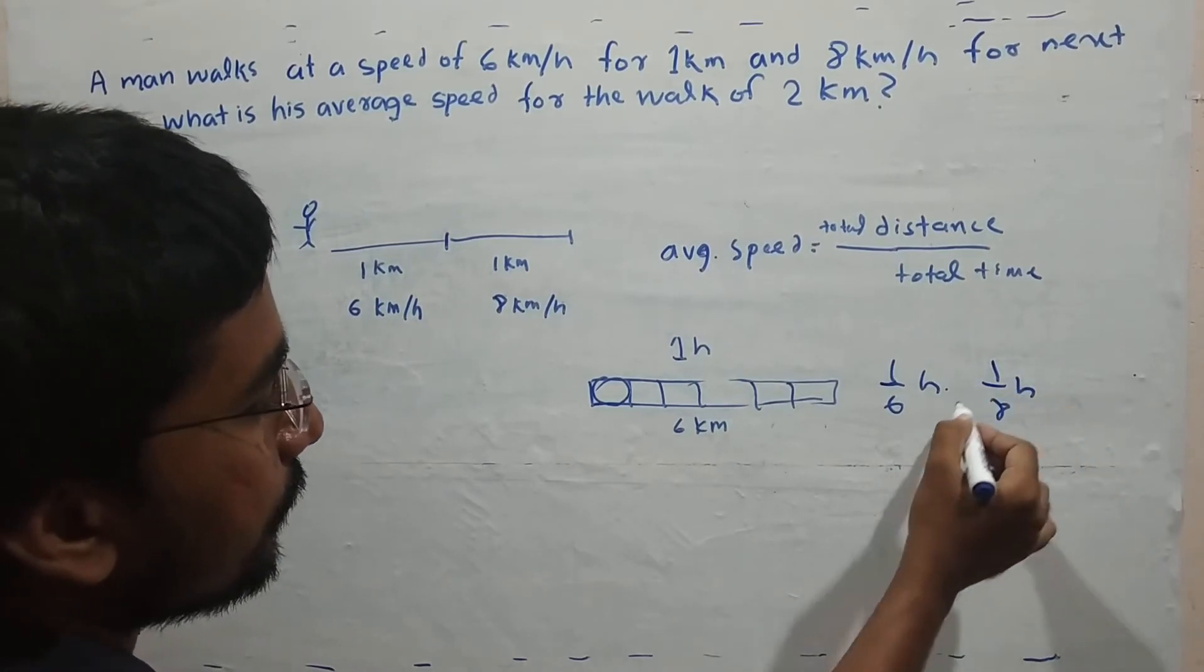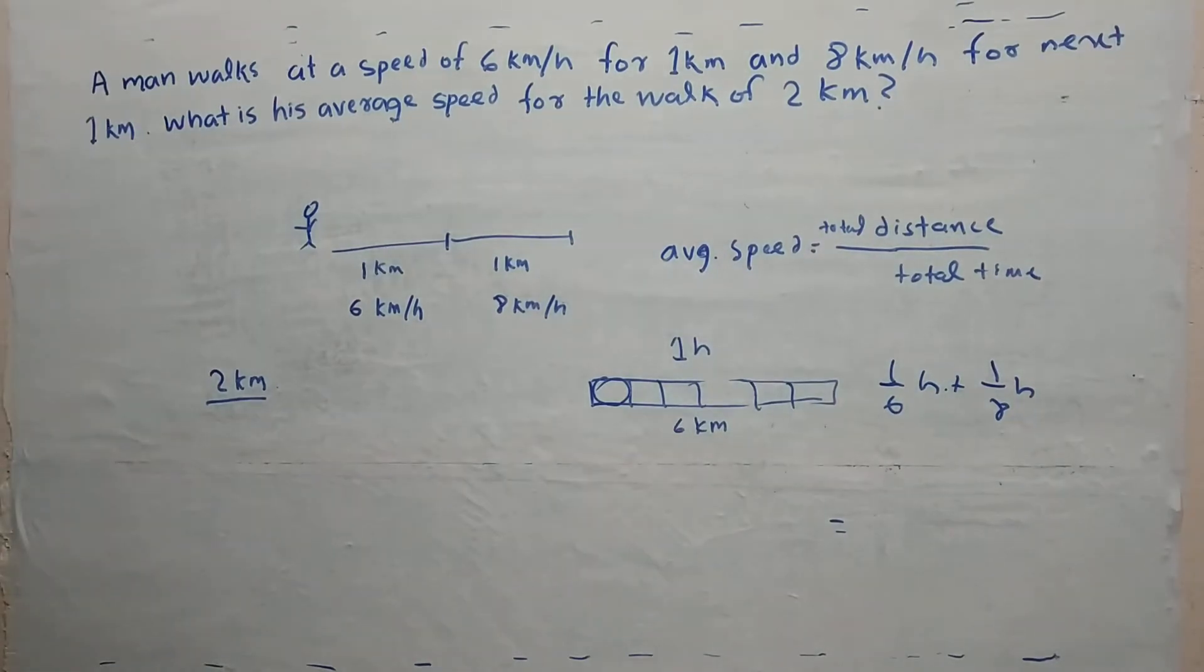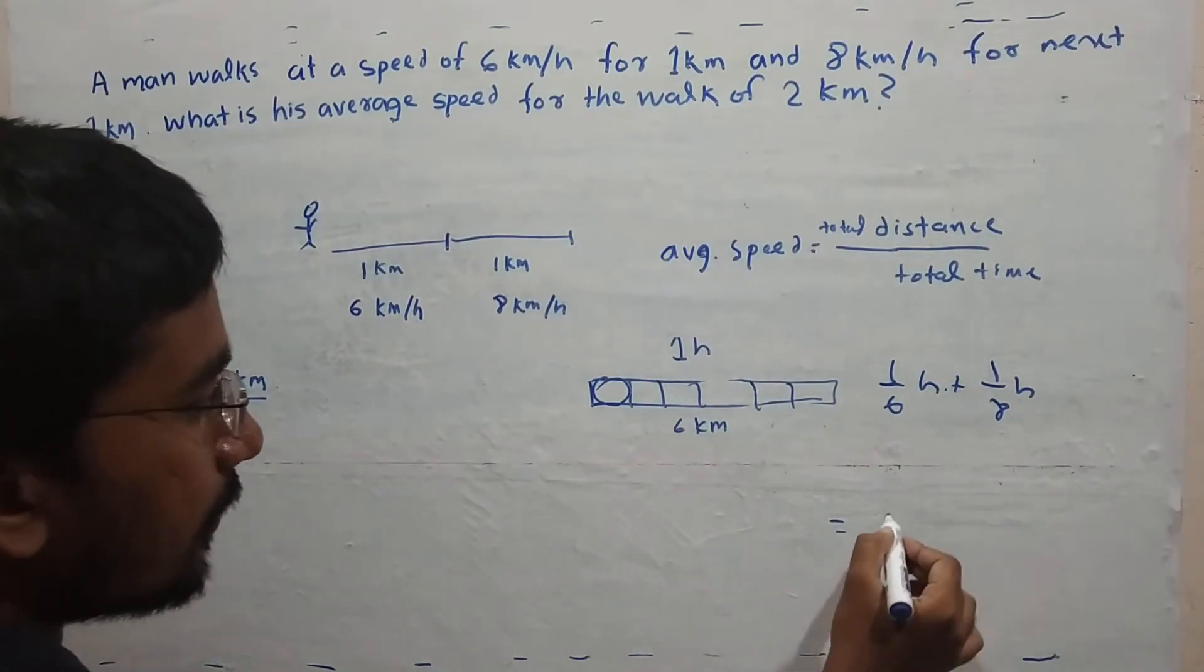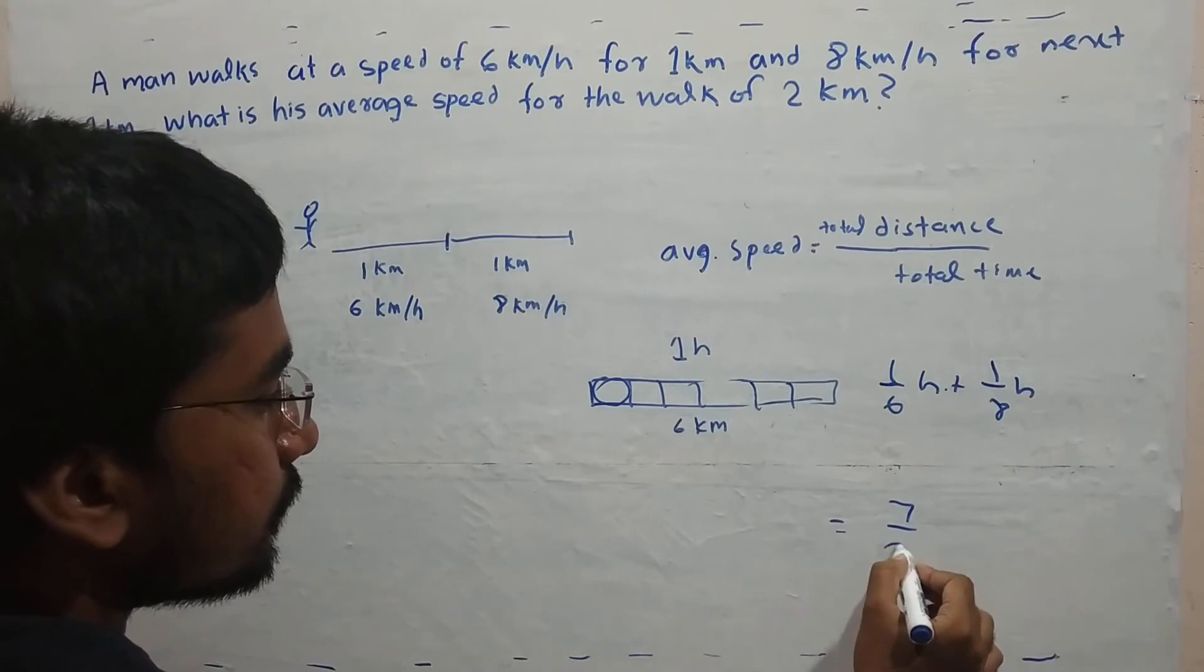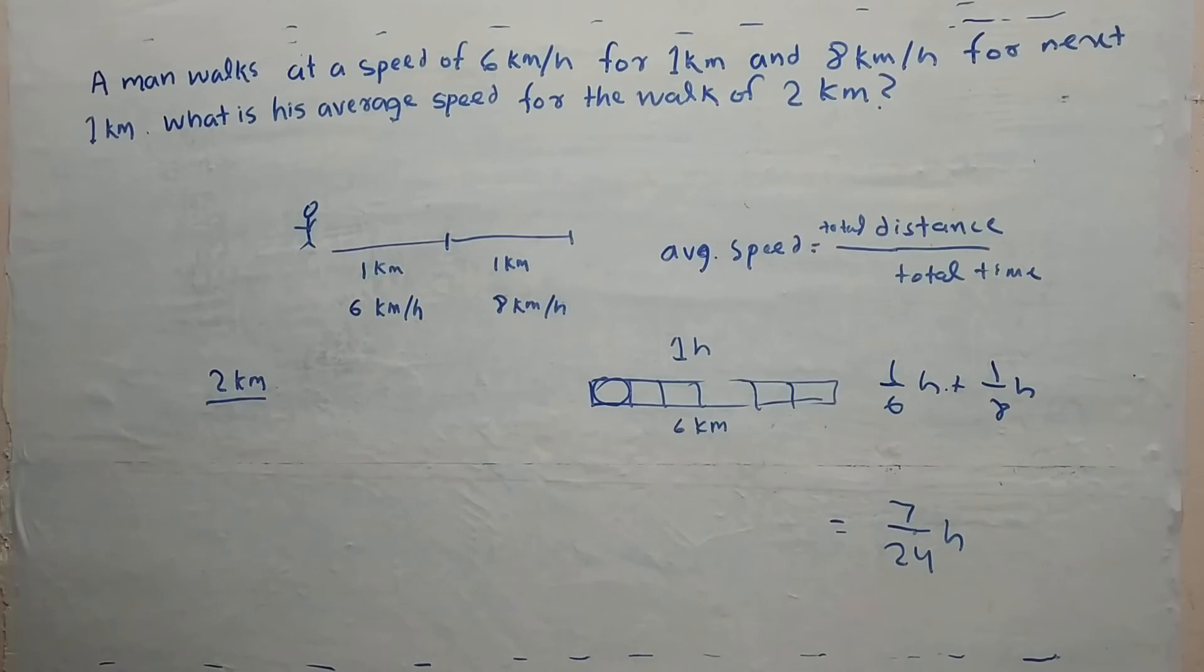Adding these times together: 1/6 plus 1/8 equals 7/24 hour.